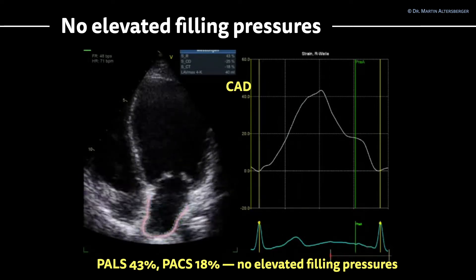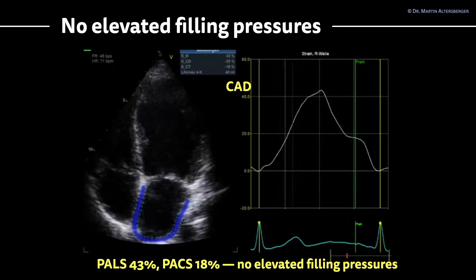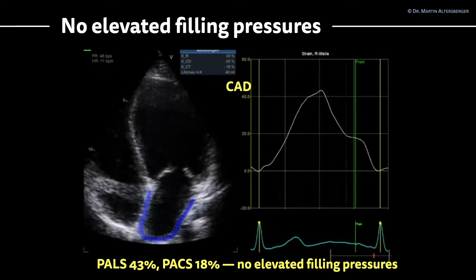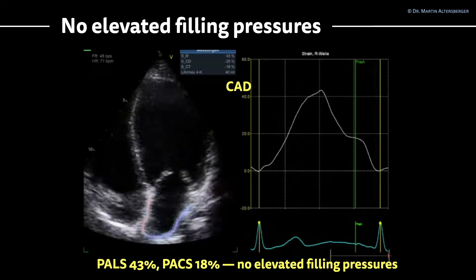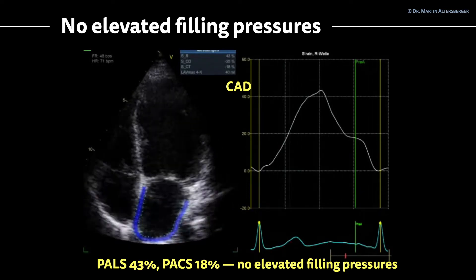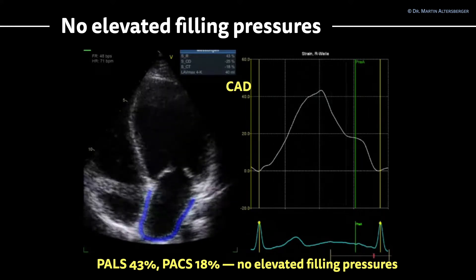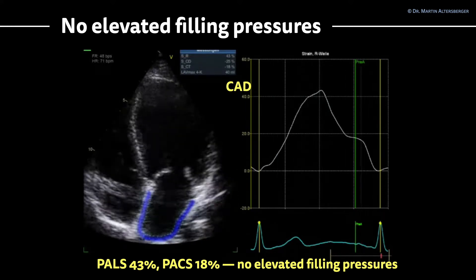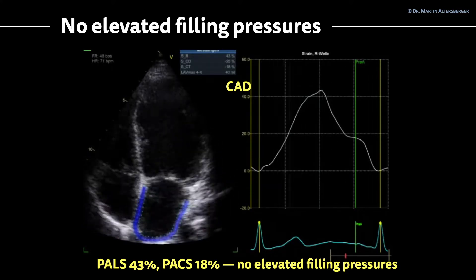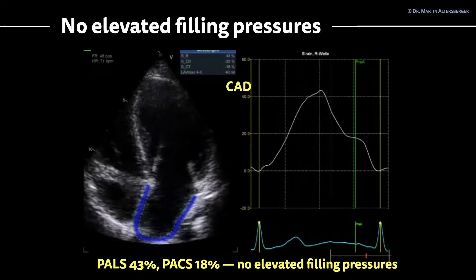In this case, the peak atrial longitudinal strain is entirely normal at 43%. The PaX of 18% is also entirely normal. So in this case, we are practically sure that there are no elevated filling pressures. This was a patient with coronary artery disease and you can see the apical wall motion abnormality, but this patient was not symptomatic. We do know that filling pressures are not elevated.